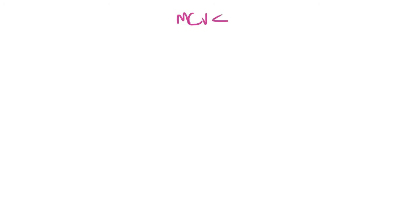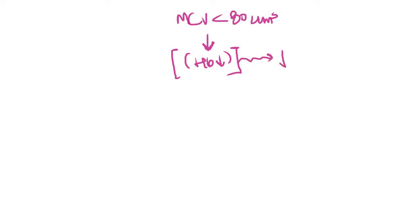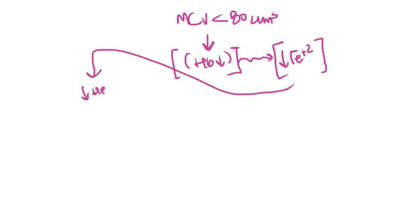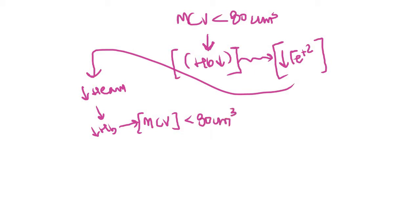In the case of microcytic anemias, you know that the MCV is less than 80 micrometer cubed, because the RBCs have undergone an extra division. The RBCs undergo extra division because the hemoglobin inside those RBCs or their precursor cells was less than normal. There were various reasons why hemoglobin was less than normal, and among those the most important was decreased iron supply. As a result of decreased iron supply, there will be decreased heme and therefore decreased hemoglobin, leading to microcytic anemia. This is the basic pathophysiology of iron deficiency anemia.